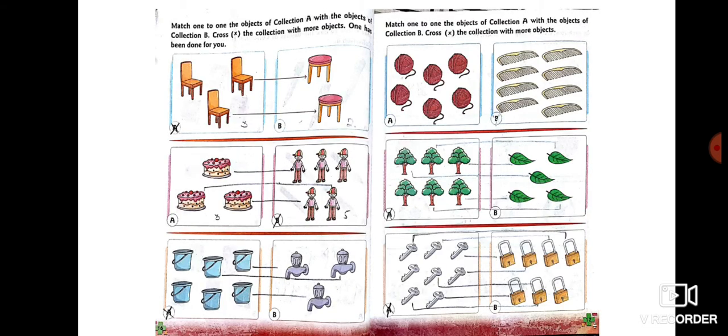Again on pages 16 and 17, we have to match one-to-one objects of collection A with the objects of collection B. But if there are more objects in one collection than the other, we will put a cross sign in the collection that has more objects.